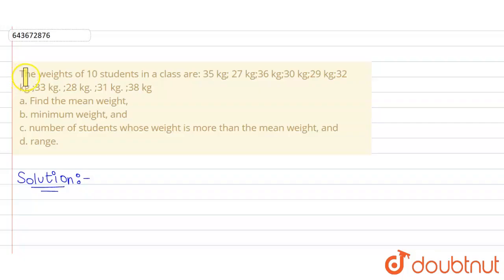Hello guys, our question is: the weights of 10 students in a class are given as follows, and we have to find the mean weight, the minimum weight, number of students whose weight is more than the mean weight, and the range. So let us start.